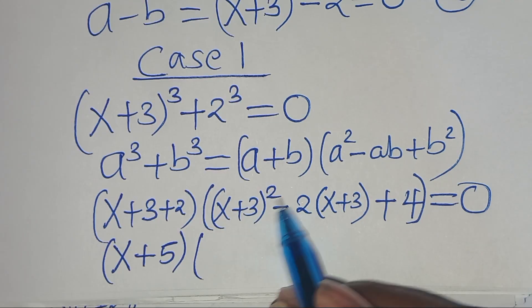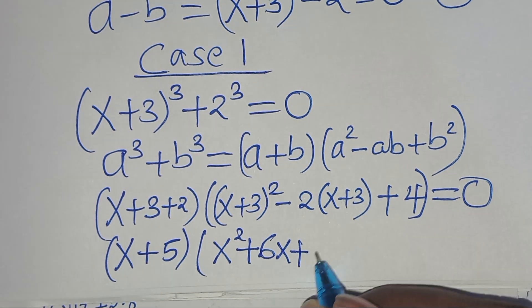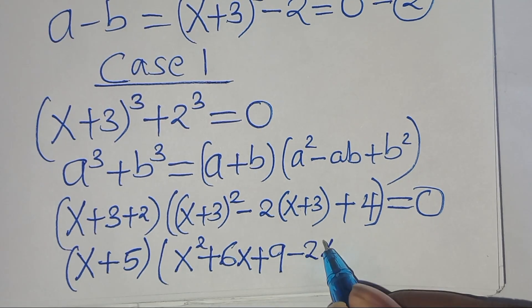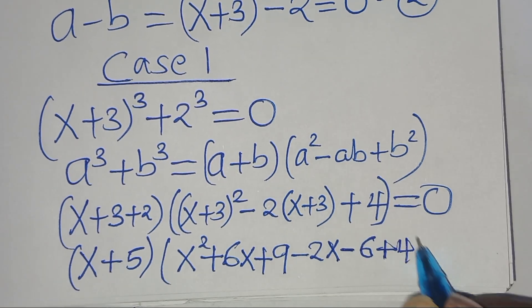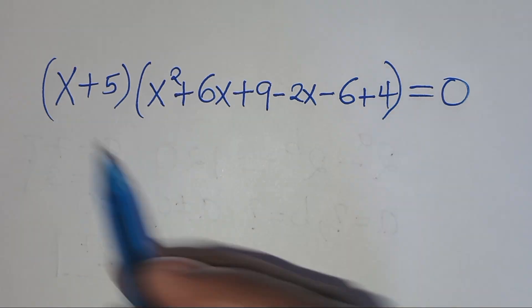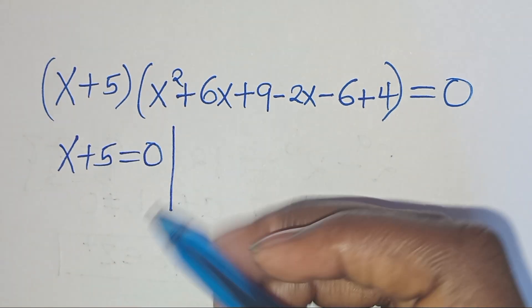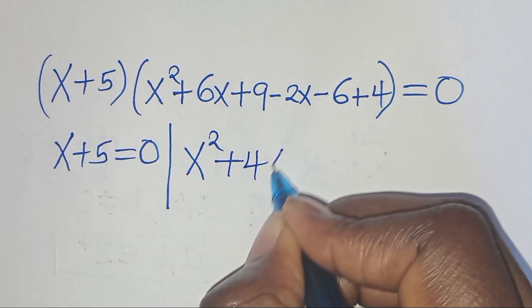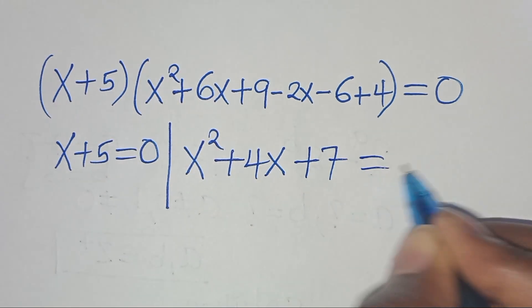On the other side we have x squared plus 6x, then plus 3 squared which is 9, then subtract 2 times x which is minus 2x, minus 2 times 3 which is minus 6, then plus 4, all times 5, equal to 0. Simplifying: we have x plus 5 equal to 0, and on the other side x squared plus 4x — combining 6x minus 2x — then 9 minus 6 is 3, plus 4 is 7, giving x squared plus 4x plus 7 equal to 0.